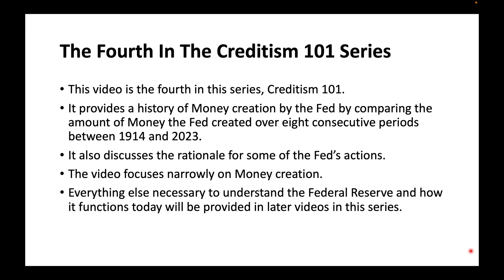This video is the fourth in this series, Creditism 101. It provides a history of money creation by the Fed by comparing the amount of money the Fed created over eight consecutive periods between 1914 and 2023. It also discusses the rationale for some of the Fed's actions. The video focuses narrowly on money creation. Everything else necessary to understand the Federal Reserve and how it functions today will be provided in later videos in this series.